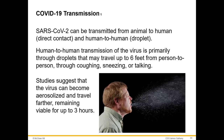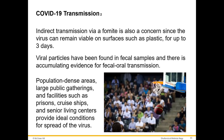The virus can be transmitted from animal to human by direct contact, and human to human by droplet. Droplets are small particles released every time a person coughs, sneezes, or talks, and can spread up to six feet or farther. Studies suggest the virus can also become aerosolized and travel farther, remaining viable for up to three hours in the air. Transmission by fomite is also a concern since the virus can remain viable on surfaces like plastic for up to three days.